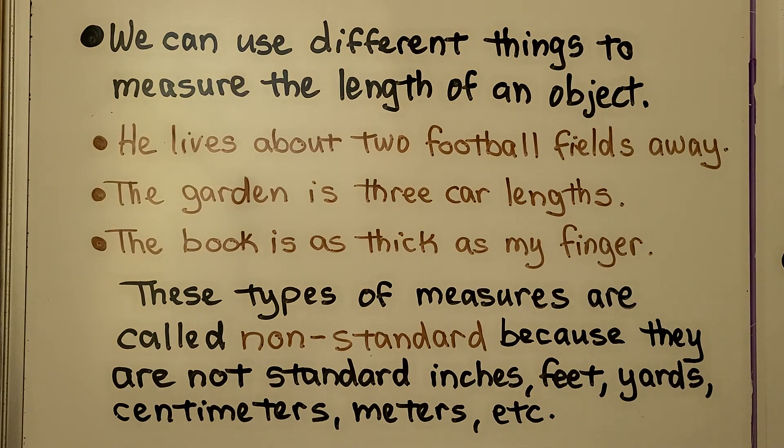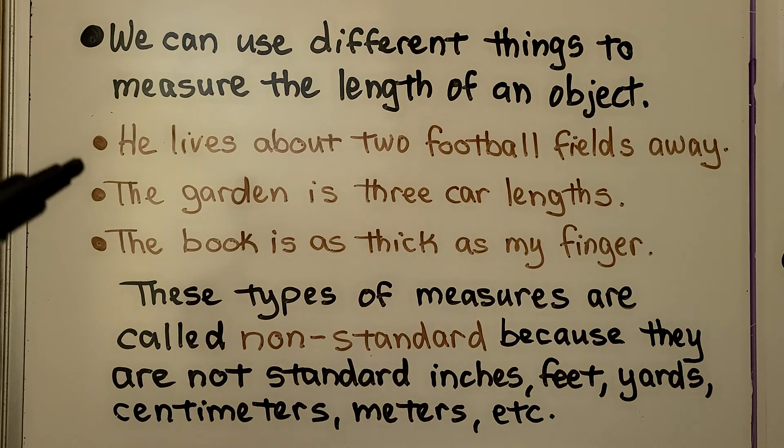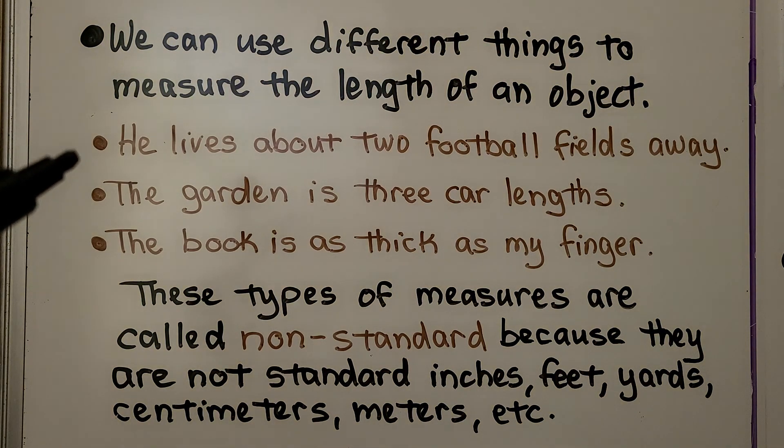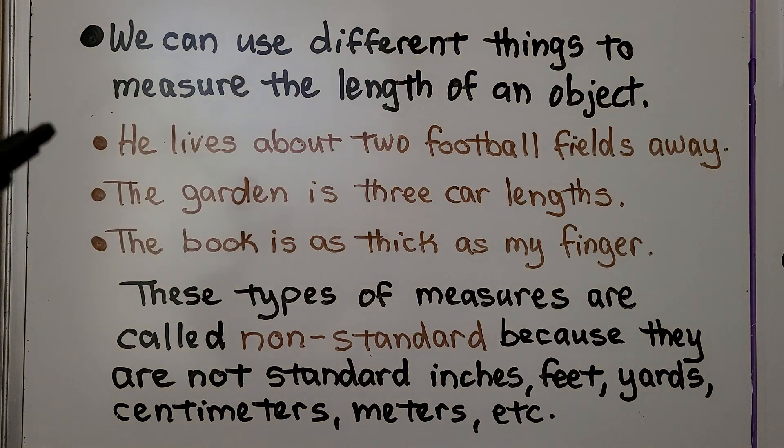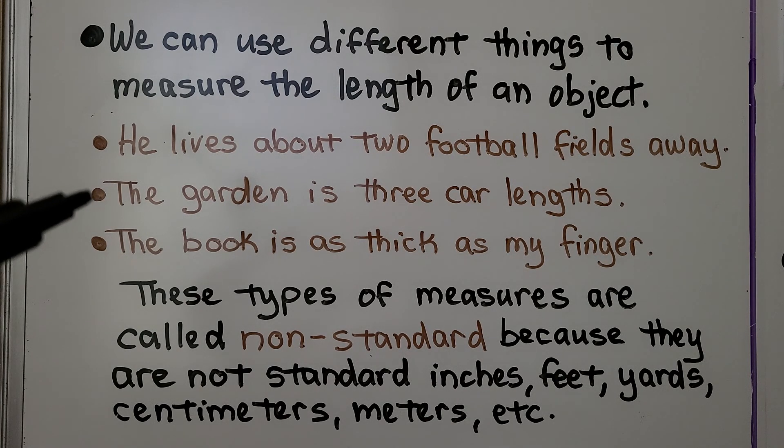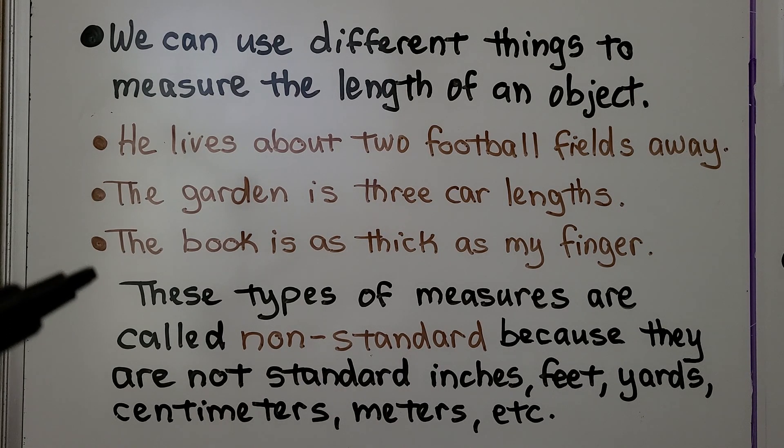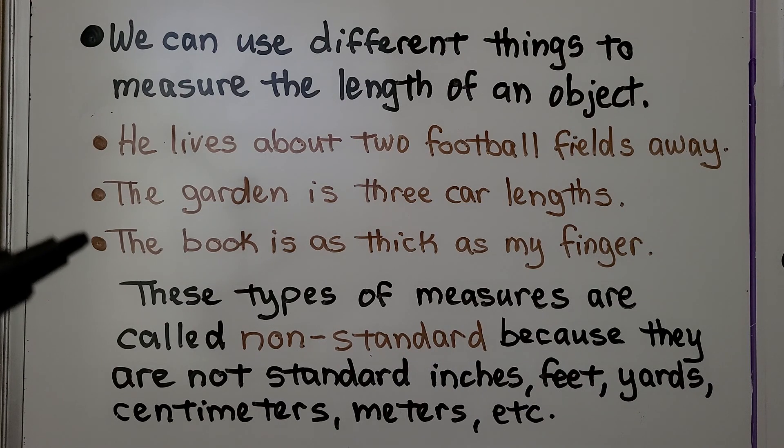We can use different things to measure the length of an object. If we say he lives about two football fields away, you'll know about how far away he lives if you know how long a football field is. Or the garden is three car lengths - we can imagine three cars. The book is as thick as my finger, giving a general idea of how thick it is.